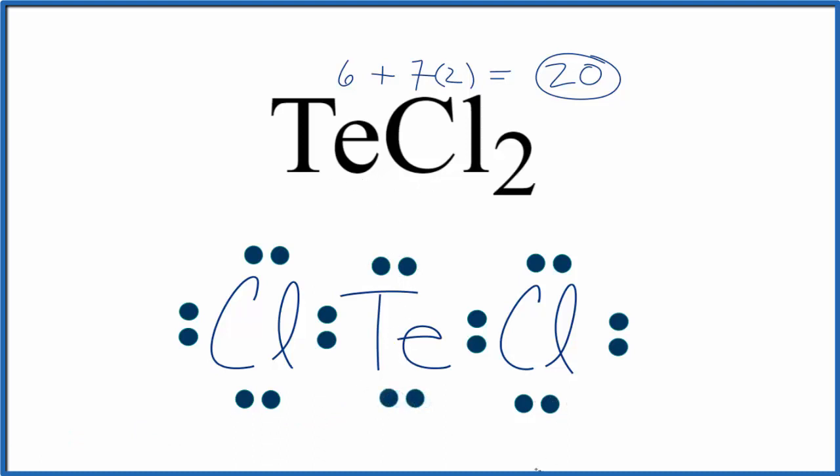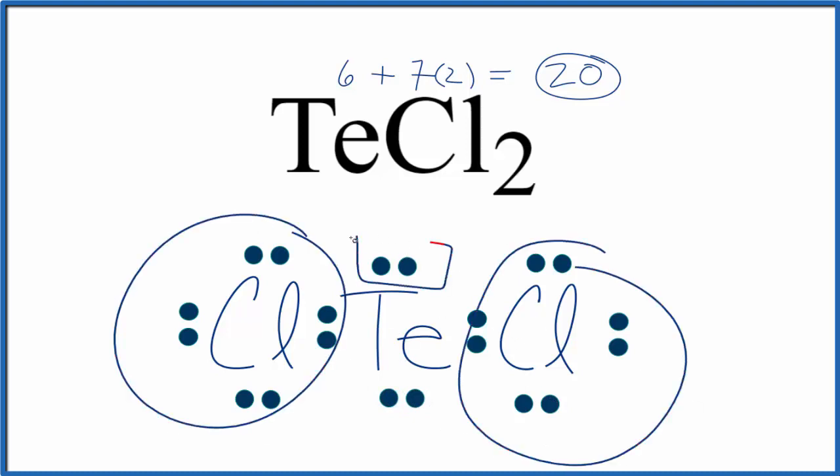Let's take a look at the molecular geometry and try to visualize that. We have two atoms and then two lone pairs bound to that central Te atom. Let's see what that looks like.